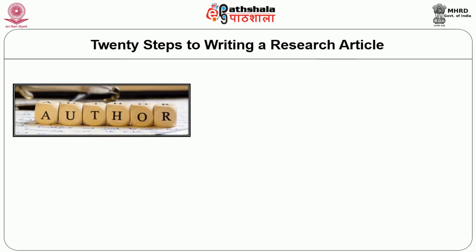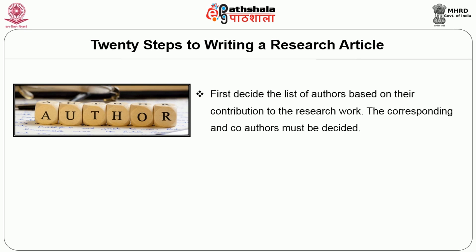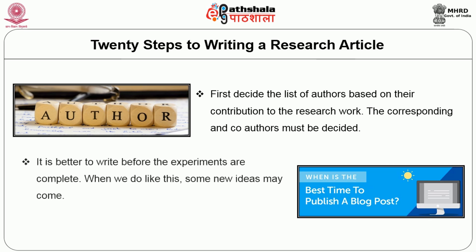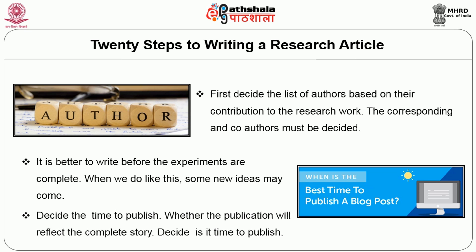There are 20 steps to write a research article. Step 1: Decide the list of authors based on their contribution to the research work; decide the corresponding and co-authors. Step 2: It is better to write before the experiments are complete, as new ideas may emerge. Step 3: Decide the time to publish — whether the publication will reflect the complete story.